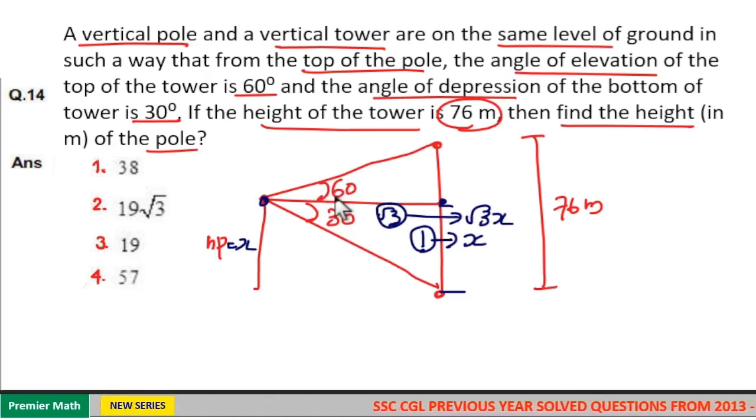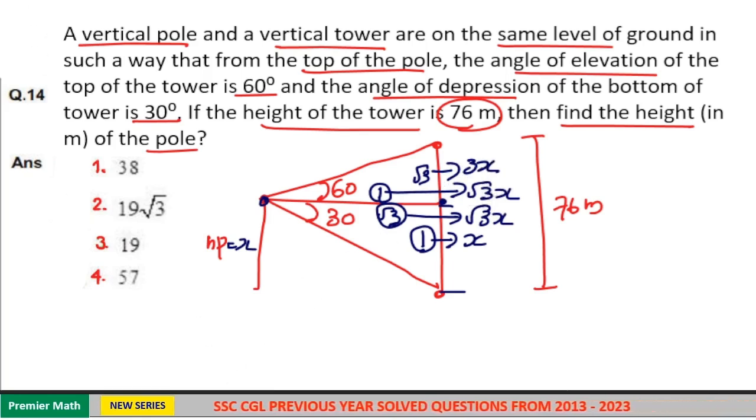Now if I take the upper triangle, tan 60 is equal to root 3, that is opposite side and adjacent side are in this ratio. This one part in the upper triangle is equal to the horizontal distance root 3 x. Then the root 3 part is equal to root 3 into root 3 x, that is 3x.